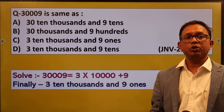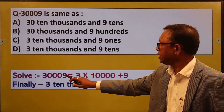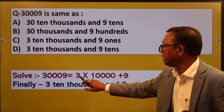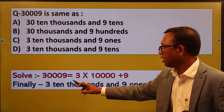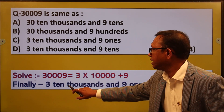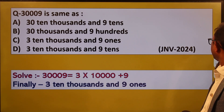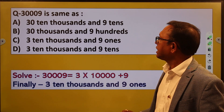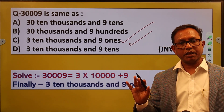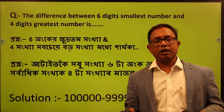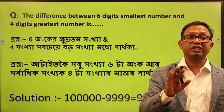30009 — 3 into 10000. What is the answer? 30000 plus 9. 3 ten-thousands and 9 ones. What is the answer? 30000 and 9 ones. This answer is correct. Do you understand? The difference between the 6-digit smallest number and the 4-digit greatest number — what is the answer? It is very simple.